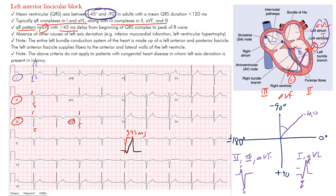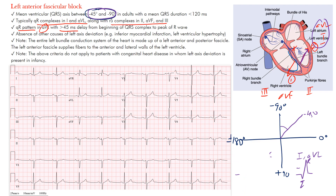Now let's look at the axis. We won't go over how to find it in full detail — you can go back and listen to those other lectures — but let's take a look at what the axis is here. We're looking for that leftward axis in the range of between negative 45 and negative 90 degrees.